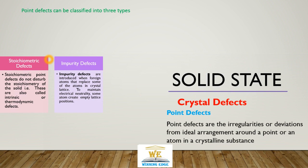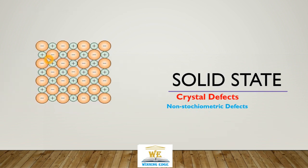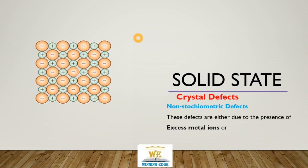The third type of defect is non-stoichiometric defects. Inorganic solids which contain the constituent elements in non-stoichiometric ratio due to defects in the crystal structure are known as non-stoichiometric defects. This is an ionic crystal — an ideal crystal with proper cations and anions arrangement in 3D space. Non-stoichiometric defects are either due to the presence of excess metal ions or deficiency of metal ions.